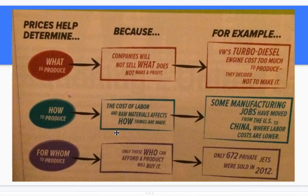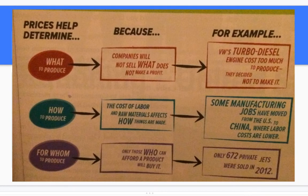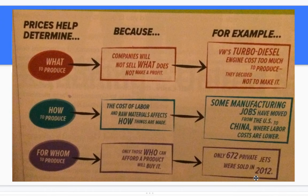How to produce: the cost of labor and raw materials affects how things are made. Some manufacturing jobs have moved from the United States to China where labor costs are lower — the decision is made to take the company overseas to get cheaper labor, lower overhead, and not use the American workforce. For whom to produce: only those who can afford a product will buy it. For example, only 672 private jets were sold in 2012 — because if there's no money or demand, companies don't need to make them.